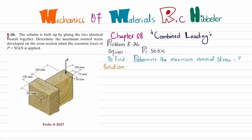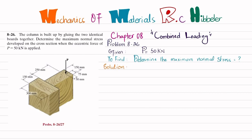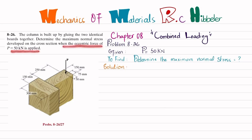Welcome back. Problem 8-26, taken from Chapter 8 - Combined Loading in Mechanics of Materials by R.C. Hibbeler. The problem statement: the column is built up by gluing two identical boards together. Determine the maximum normal stress developed on the cross section when an eccentric force of P = 50 kilonewtons is applied.